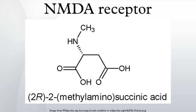NR1 subunits bind the co-agonist glycine and NR2 subunits bind the neurotransmitter glutamate. The agonist binding module links to a membrane domain, which consists of three transmembrane segments and a re-entrant loop reminiscent of the selectivity filter of potassium channels. The membrane domain contributes residues to the channel pore and is responsible for the receptor's high unitary conductance, high calcium permeability, and voltage-dependent magnesium block.